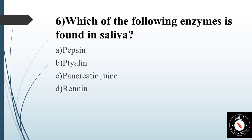Sixth question. Which of the following enzyme is found in saliva? Option A: Pepsin. Option B: Ptyalin. Option C: Pancreatic juice. Option D: Renin. Answer is Option B: Ptyalin.